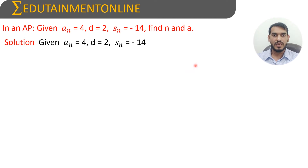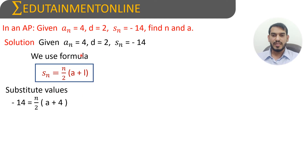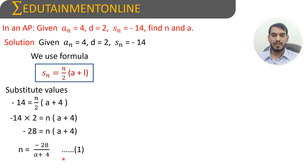We will use two formulas: the sum of n terms formula and the nth term formula. First, we use the formula Sₙ equals n by 2 into a plus l, where l is the last term of the AP. Substituting, minus 14 equals n by 2 into a plus 4, since aₙ is the last term. Transposing, minus 28 equals n into a plus 4, therefore n equals minus 28 divided by a plus 4. Considering this as equation 1.